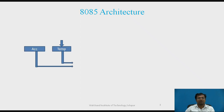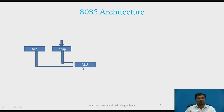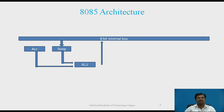Let us have a glance at the architecture. There is an accumulator register which is 8 bits in width. There is another temporary register which is also 8 bits in width. Operands come from these two registers — the accumulator and the temp register — and are forwarded to the arithmetic and logic unit of the microprocessor 8085. This unit performs arithmetic or logical operations on the data, generates the result, and forwards it through the 8-bit internal data bus towards the accumulator, or it may be stored in memory depending on the instruction.